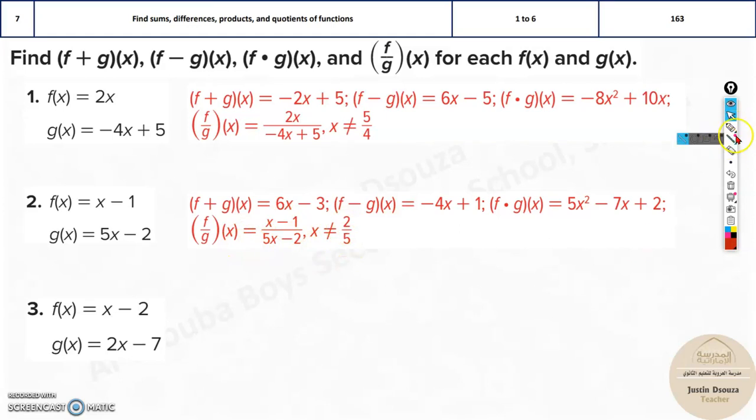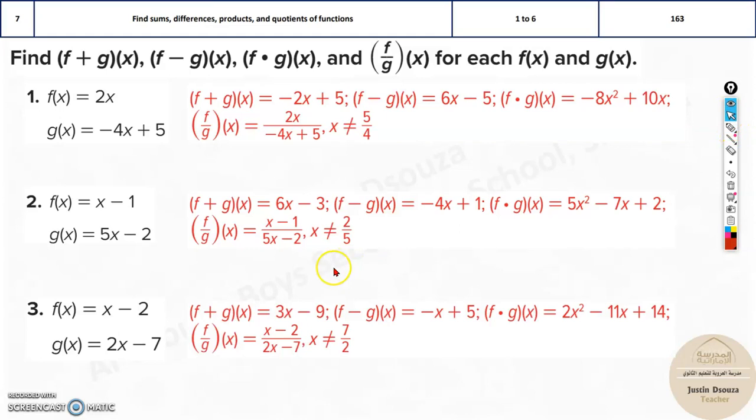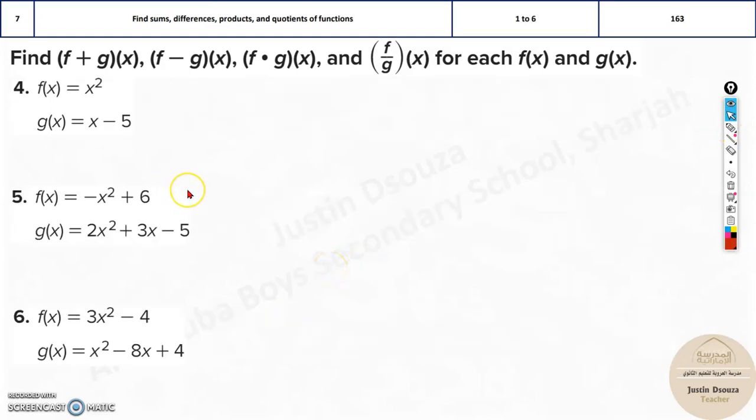And lastly, just write them divided by. Find the non-equal to sign. In the sense, when does this become undefined? x should not be equal to 2 by 5. So that's how we find the undefined. Please try all of these by yourself, and then check the answer.